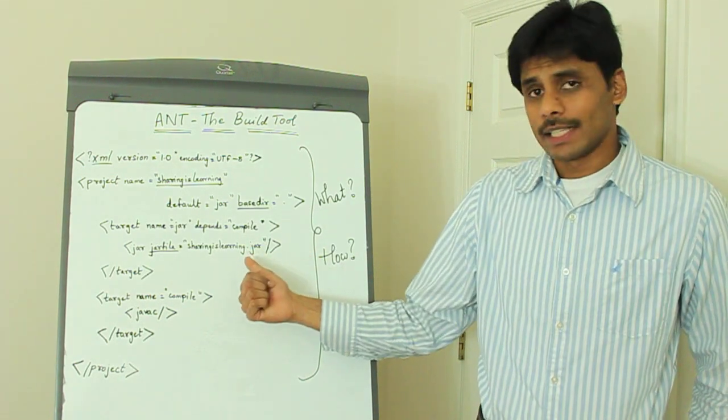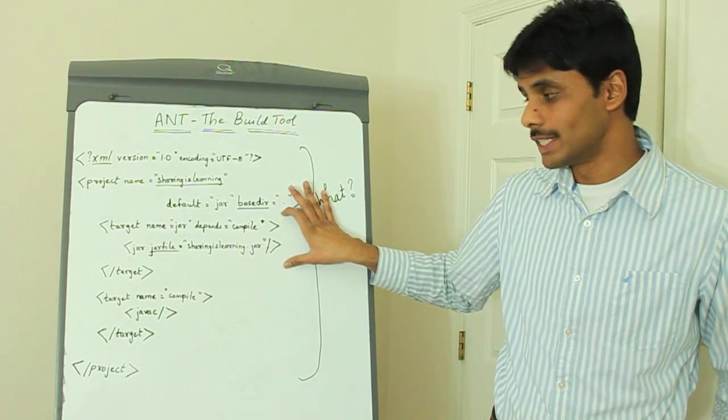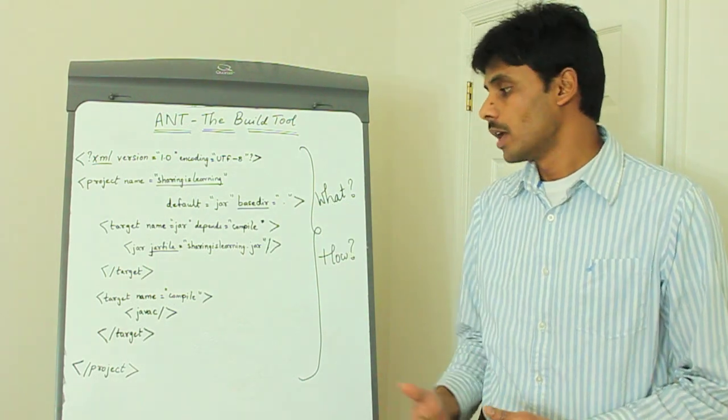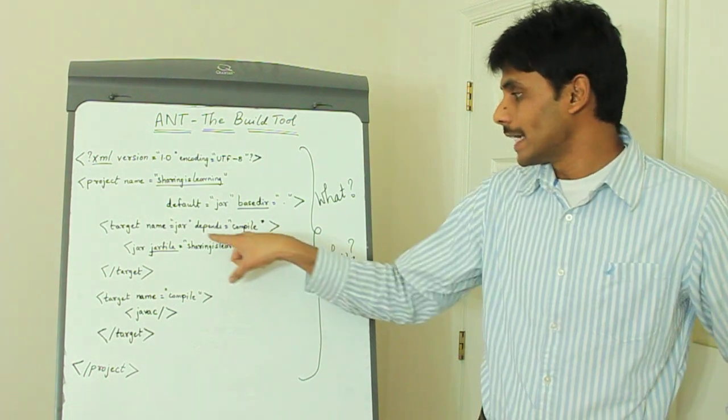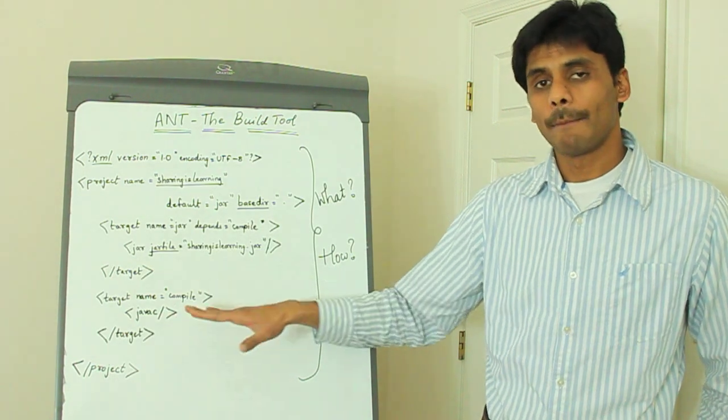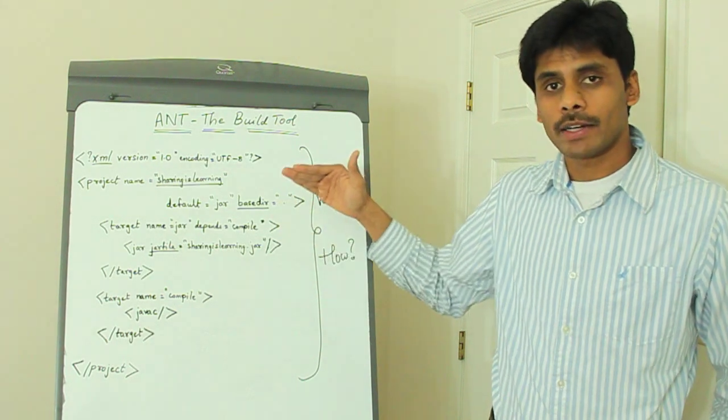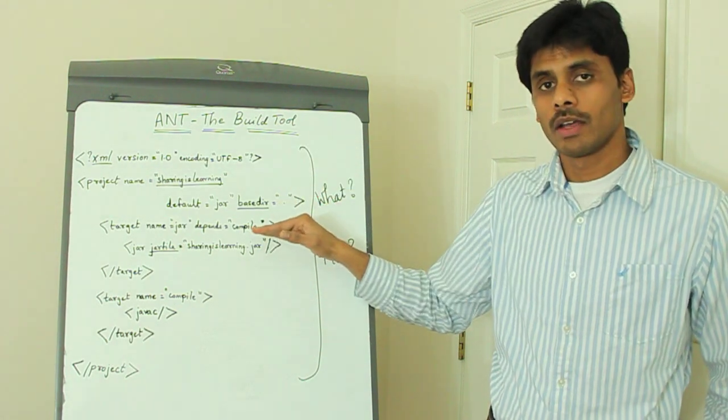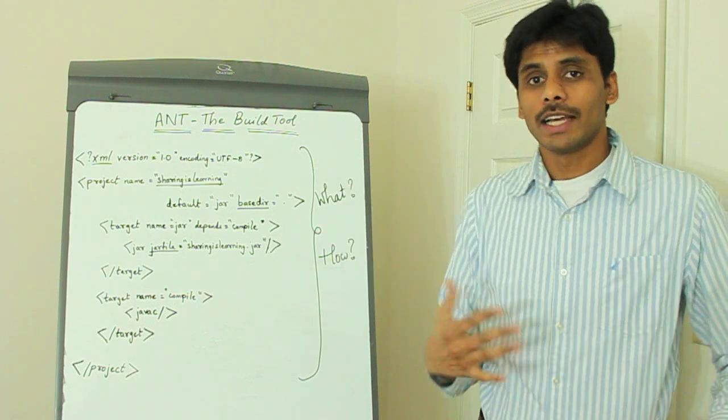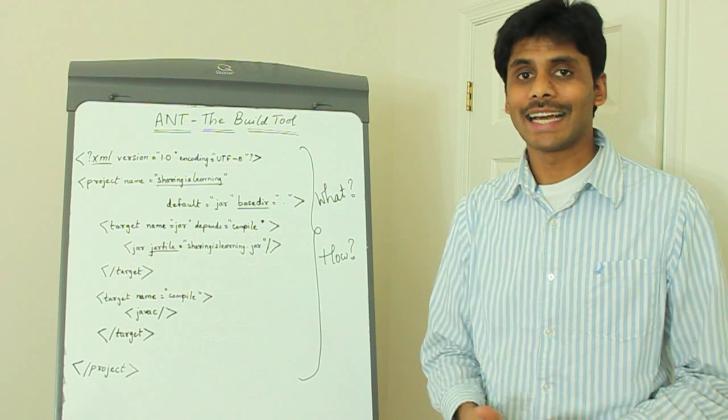Each of these tasks can depend on other tasks. For example, the target I have here is jar. Even before you build a jar of your project or application, you need to compile the classes. So the jar depends on compile, and what compile does is it uses the JavaC task from Ant to compile your source code. We can have multiple targets - a war target which depends on jar, an EAR target which depends on war, and then the deploy target which deploys your EAR into the application server can depend on the EAR target.